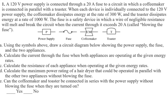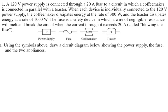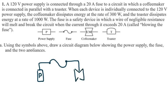For Part A, using the symbols given, draw a circuit diagram showing the power supply, the fuse, and the two appliances. So the power supply is connected through a fuse, and then the coffee maker and the toaster are connected in parallel with each other.